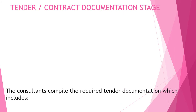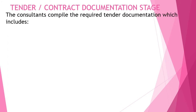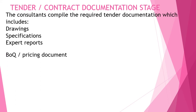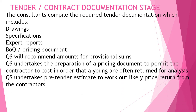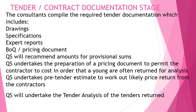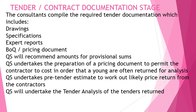In the tender and contract documentation stage, the QS compiles the required tender documentation which includes drawings, specifications, expert reports, BOQ and pricing documents, and recommends allowances for provisional sums. The QS undertakes the preparation of pricing documents to permit the contractor to cost, undertakes a pre-tender estimate to determine the likely price, undertakes tender analysis of the tenders returned, and prepares tender reports.